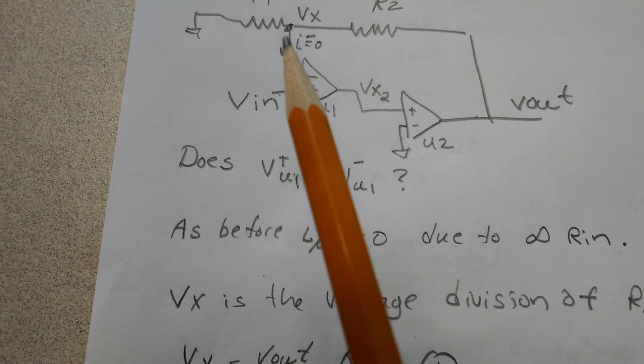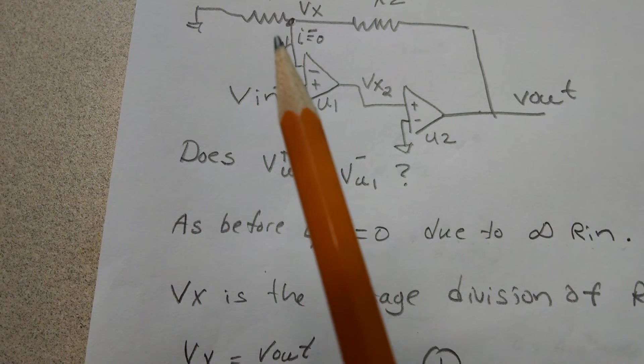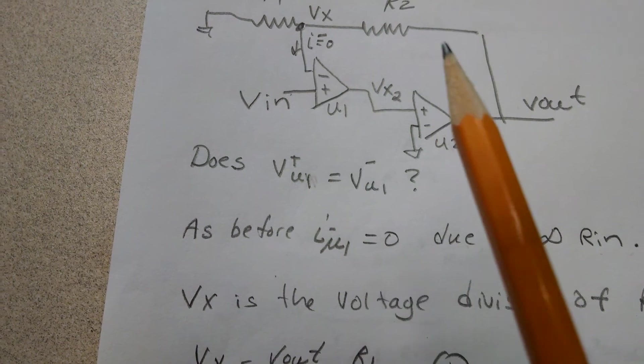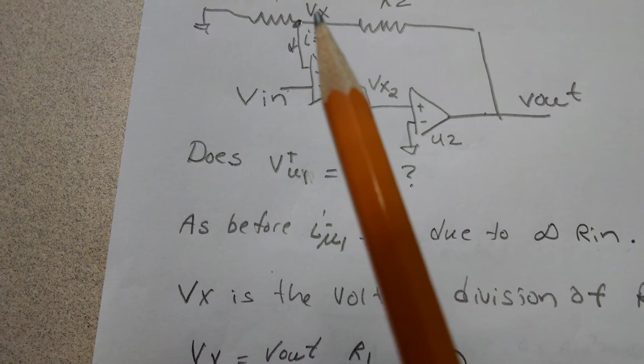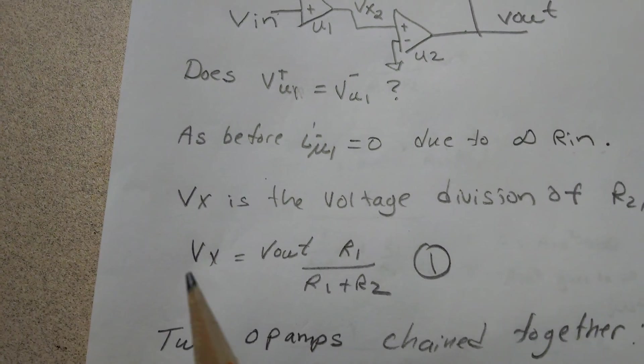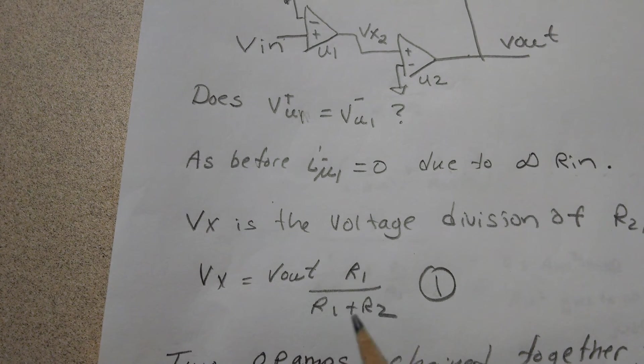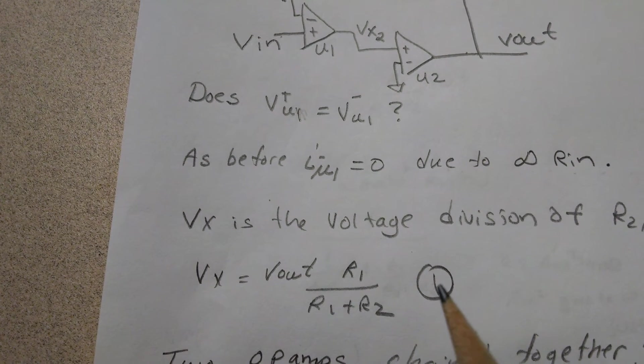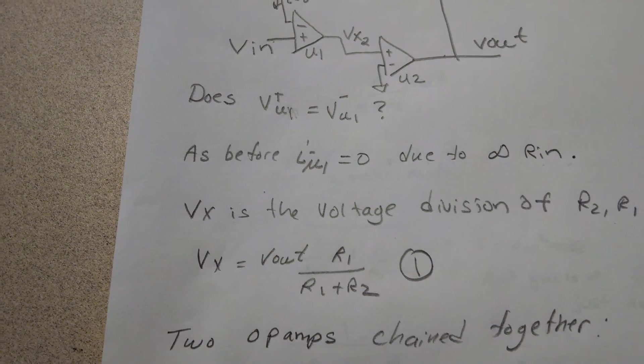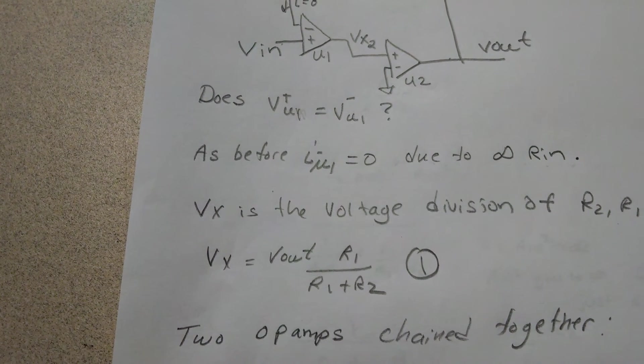But here's the thing: this Vout, R2, R1 is just like the non-inverting that we solved for before. I- is zero in an ideal op-amp case, so really R2 and R1, Vx is just the voltage division of Vout. So I get Vx equals Vout with the voltage division here.